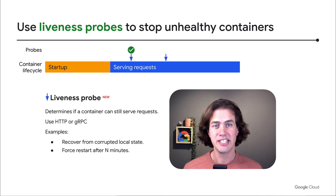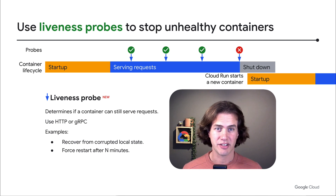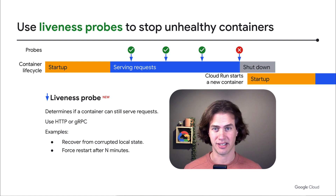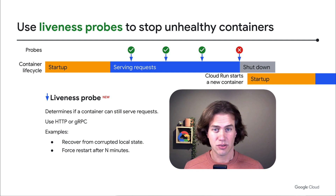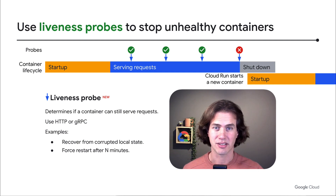You can also set a new kind of probe, a liveness probe. A liveness probe determines if a container is still able to serve requests. And if it's not, it will be shut down, and Cloud Run starts a new container. You can use liveness probes to stop containers that get into a corrupt local state, or to force a restart after a certain amount of time.